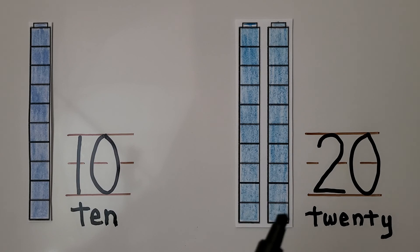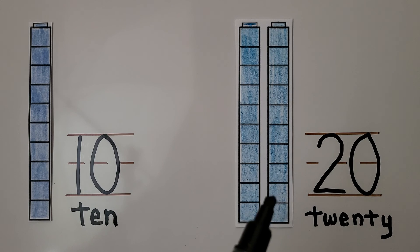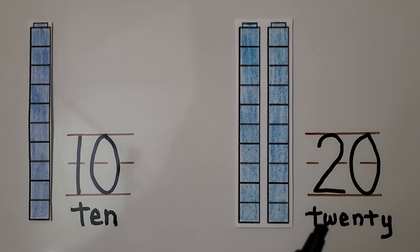Here's two cube towers. We know each one is 10. We have 10, 20. Here's the number 20 and the word twenty.